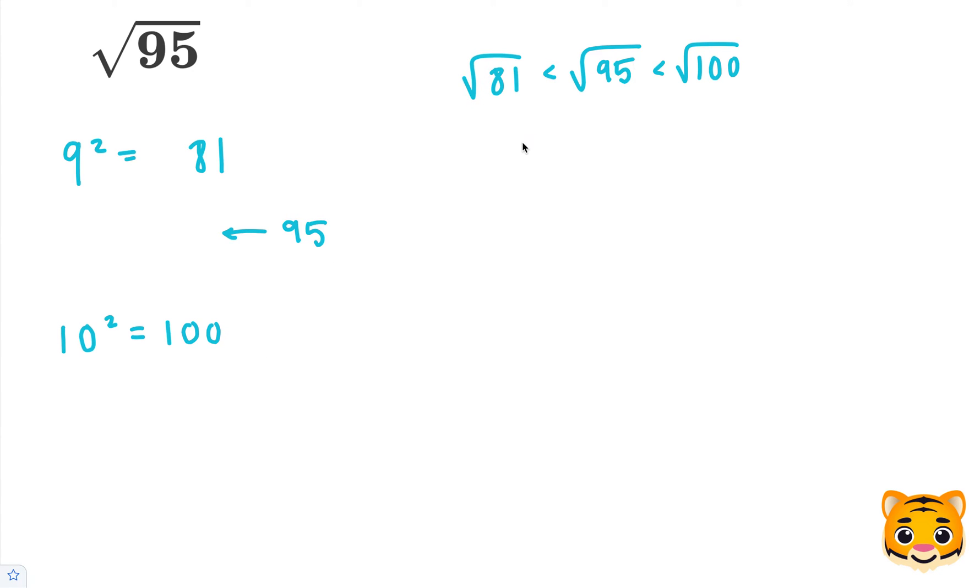Now we can rewrite the square root of 81 as 9, because 9 squared is 81. And we can rewrite the square root of 100 as 10, because 10 squared is 100. Now we can see that the square root of 95 is between 9 and 10.